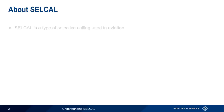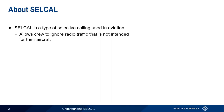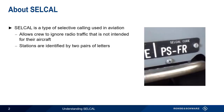As the name implies, SELCAL is a form of selective calling. Like other forms of selective calling, SELCAL allows radio users — in this case the crew of an aircraft — to ignore radio traffic that's not intended for them. Aircraft are identified by two pairs of letters, and the transmitting ground station uses this code to indicate which aircraft they'd like to communicate with.